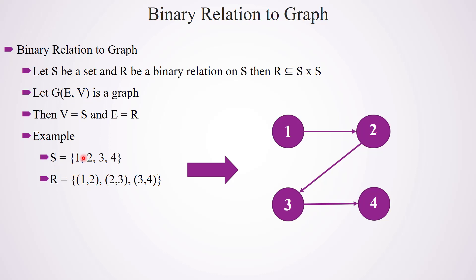Using the same example from the previous slide, the set equals {1, 2, 3, 4}, so we have 4 elements considered as 4 vertices. There is a relation (1,2), meaning there is an edge from 1 to 2. There is a relation (2,3), so there is an edge from 2 to 3. And there is an edge from 3 to 4. So this is how we can represent a relation in the form of a graph: elements in the set are considered as vertices and relations are considered as edges.